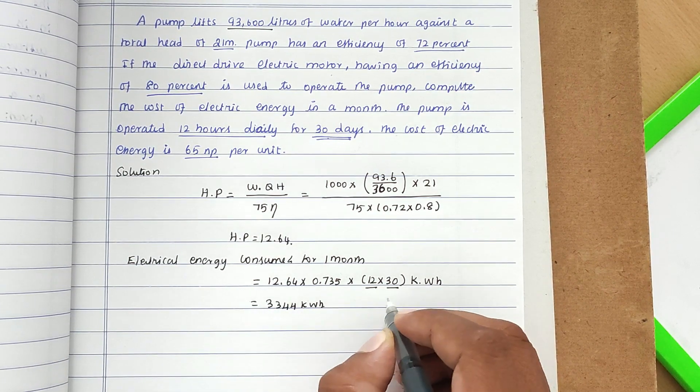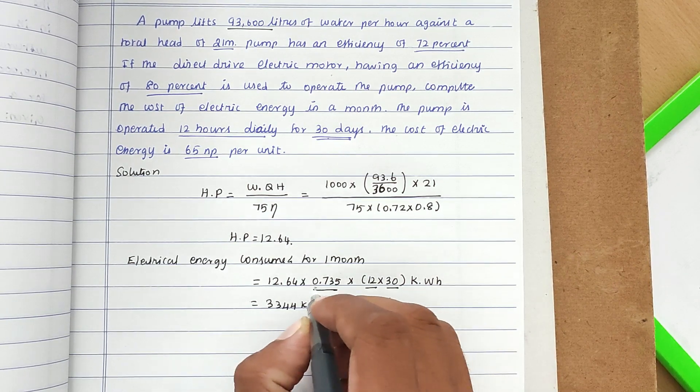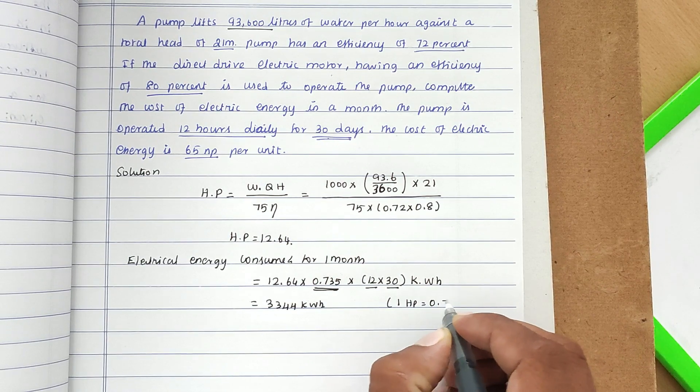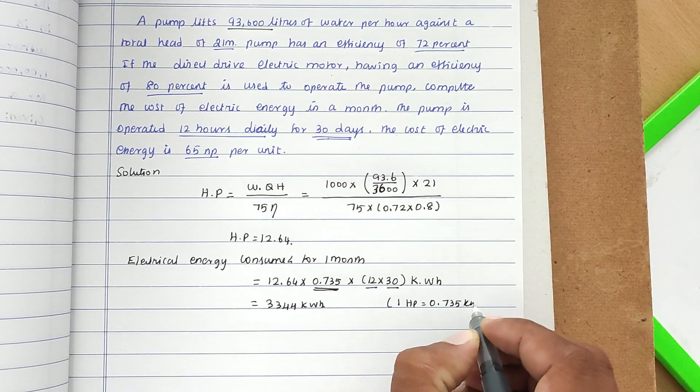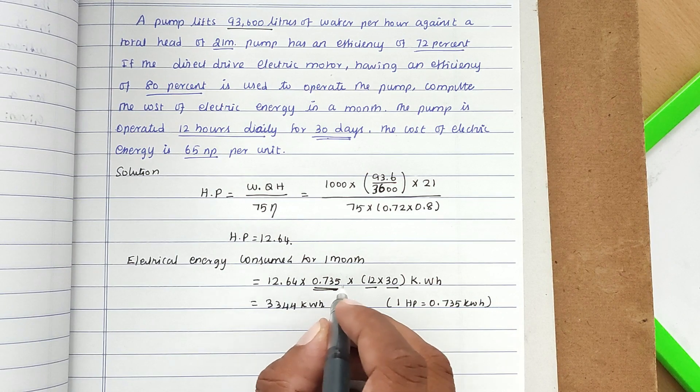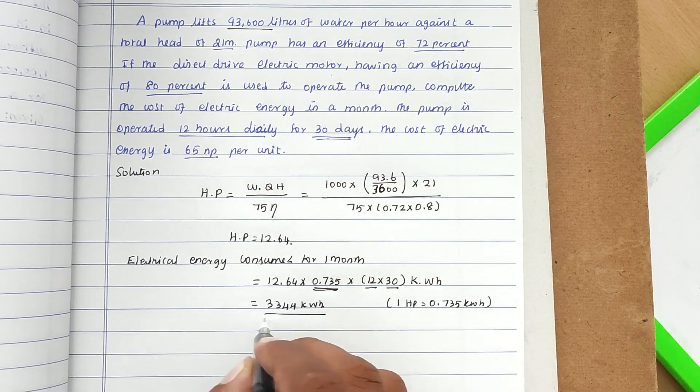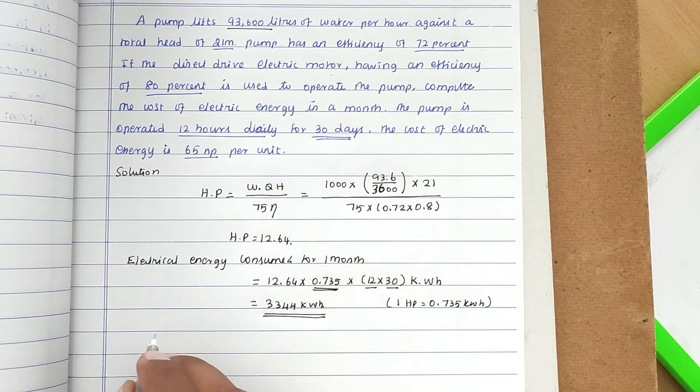We put 0.735 because 1 HP equals 0.735 kilowatt. That's why we multiply by 0.735. Now we know the kilowatt value per month, so we can find out the cost.